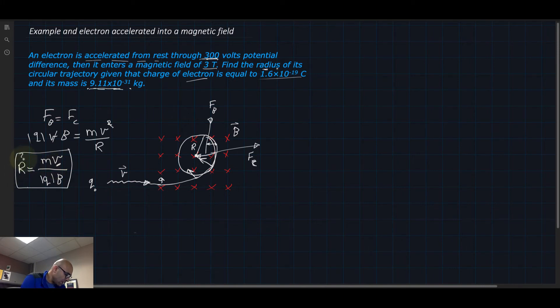So we need to use another equation to find the velocity. Let's read the problem again. This electron is actually accelerated from rest, so its kinetic energy at the beginning is zero.